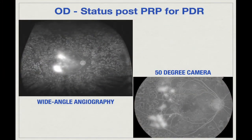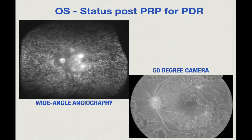Let me show you a few examples. This is an eye which had received lots of PRP before. This is an Optos wide-angle image, and in spite of that, it still shows some leakage. The other eye of the same patient, again with very heavy pan-retinal photocoagulation — in spite of that, there is some active neovascularization. This is a wide-angle image and this is what we are seeing.